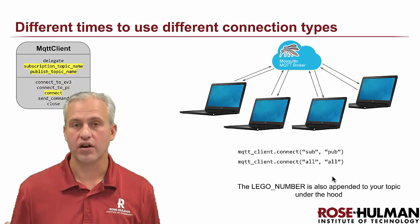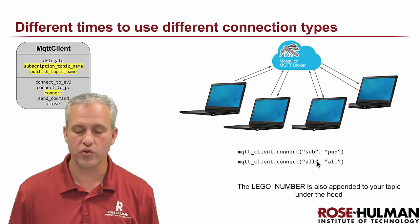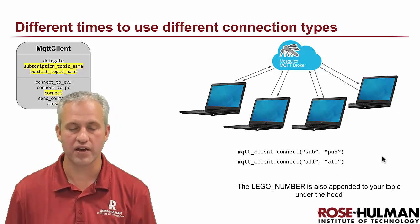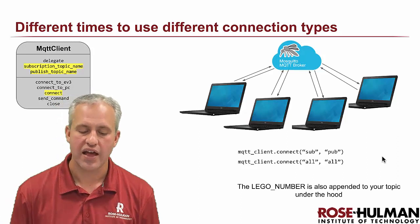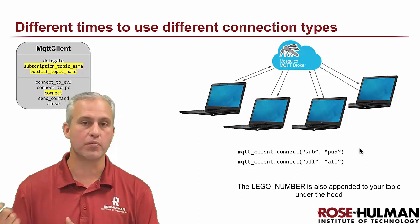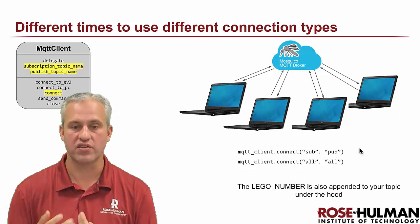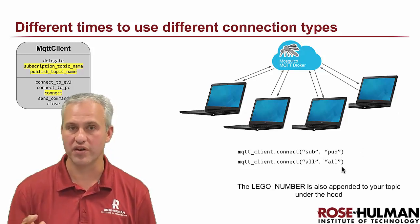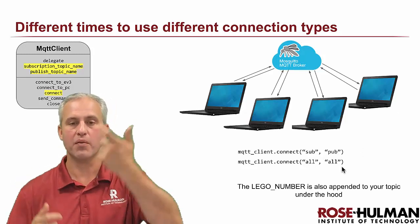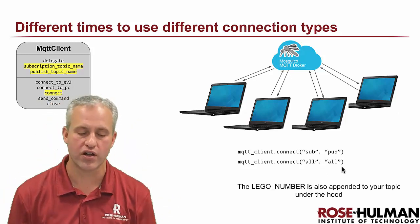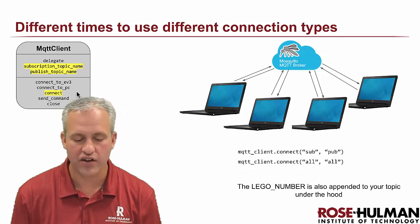There's also a more generic connection method. What that lets you do is specify the subscription topic and the publish topic manually. We'll use this generic connection whenever we are talking from computer to computer, so that way we can specify who we want to subscribe to and who we want to publish to. You could also make them the same, which is what we did in that first example — then you're publishing and listening to the same thing, so you're kind of talking to yourself but other people could talk as well. With that connect method, you can see more directly that it sets those instance variables.